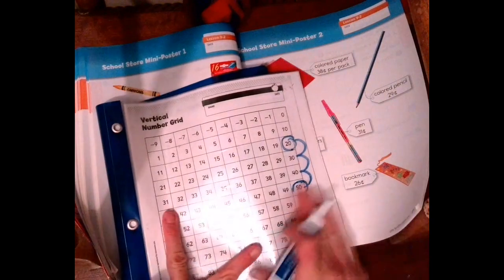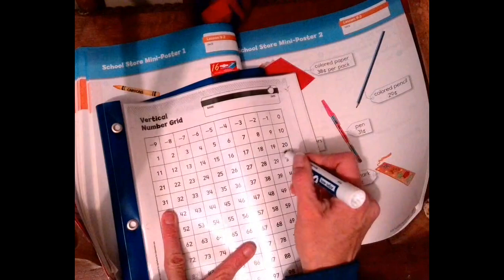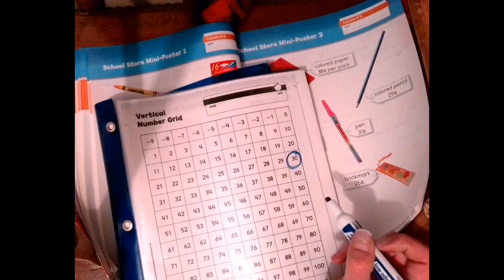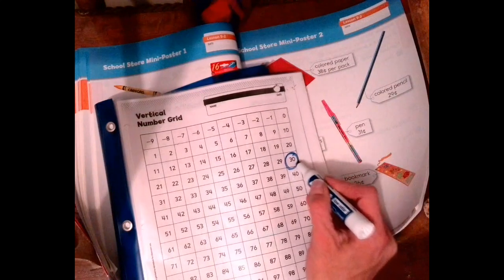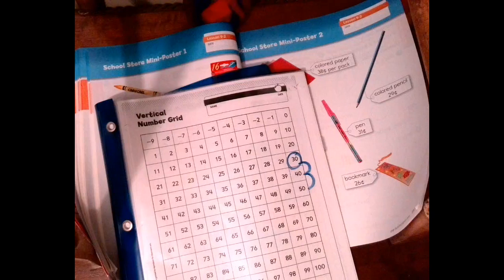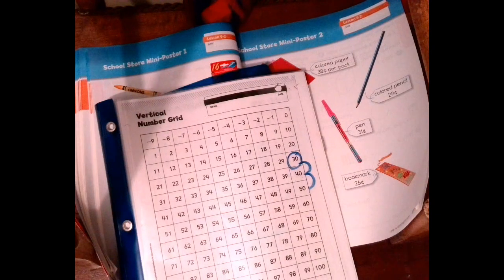If we were going to count up, we could start at 30, and we would count how many hops to get to 50, because 50 is how much the ball is. So it would be 10, 20. So our answer would be 20. All right, perfect.